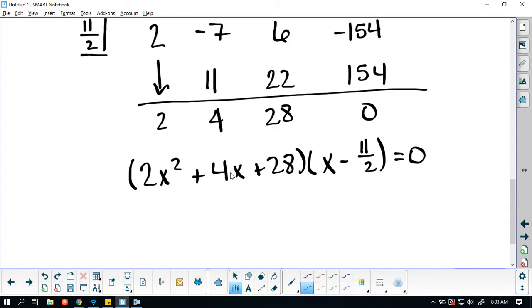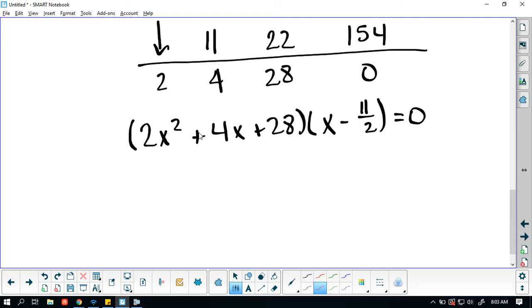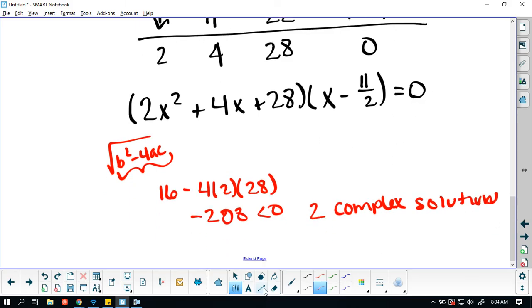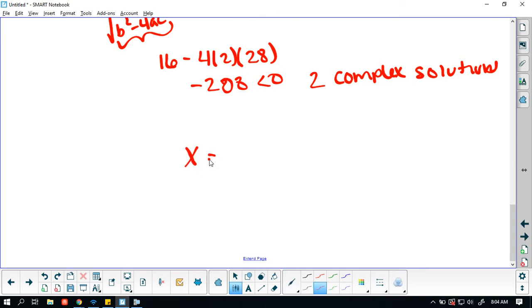So if I take this and I look for factors, I don't think anything that's going to be multiplied to give me a positive 28 will give me a positive 4. But remember back to the discriminant. We could try the discriminant to see if this will give us a real root. So looking at this, the discriminant is b squared minus 4ac. So we're going to look at 4 squared, which is 16 minus 4 times 2 times 28. And that's just going to be very heavy on the negative side, which is going to be negative 208. And according to the discriminant, this is less than 0, so we have two complex solutions.